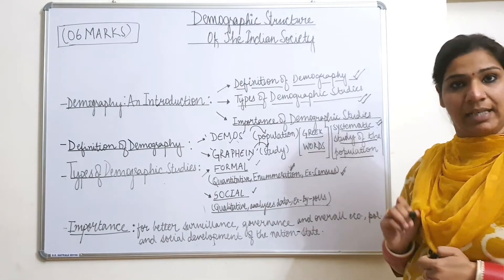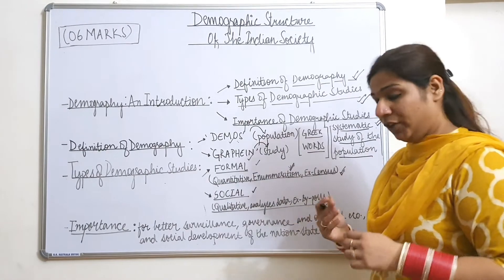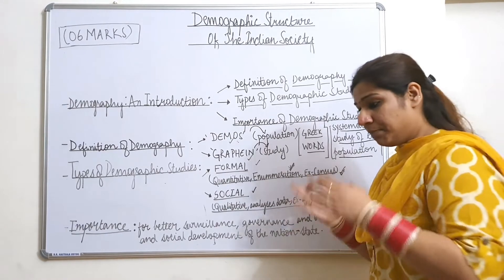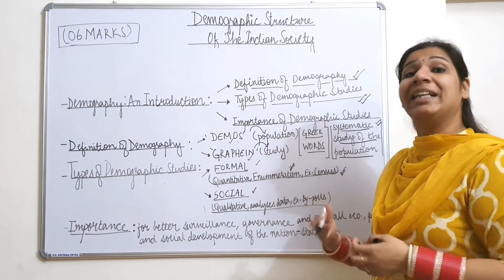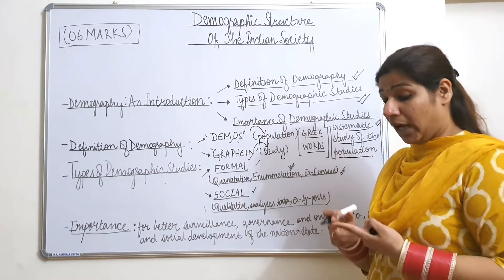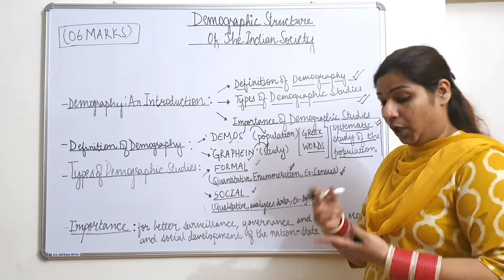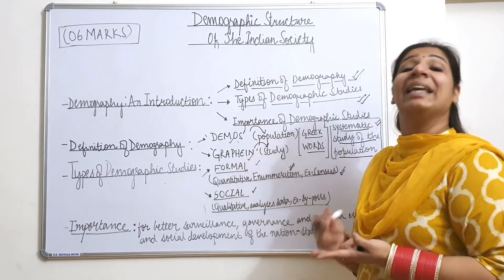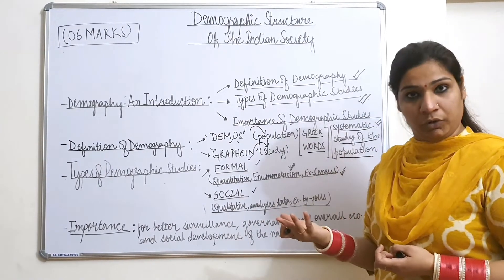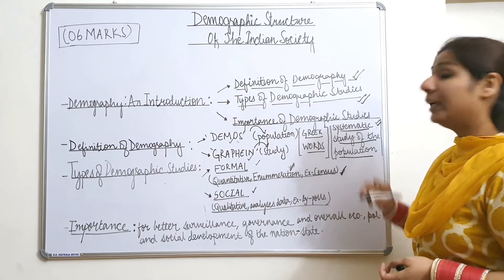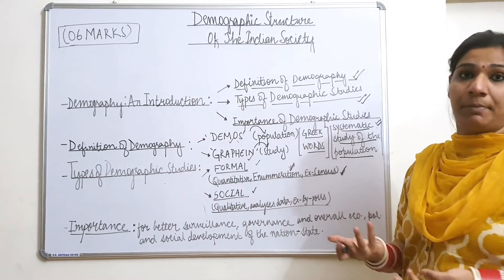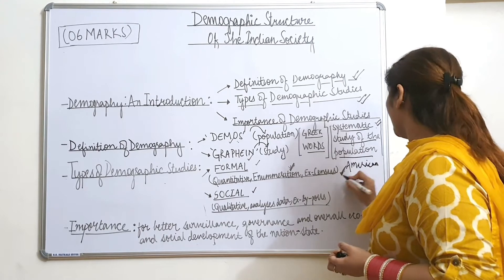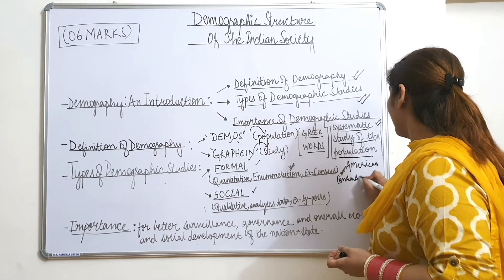In formal demography, we are largely dealing with numbers — quantitative means counting or enumerating. In a census, a person comes to your home and asks details about your family: how many members, how many males, how many females, how many are working, whether anyone is disabled — collecting data for government reference purposes.